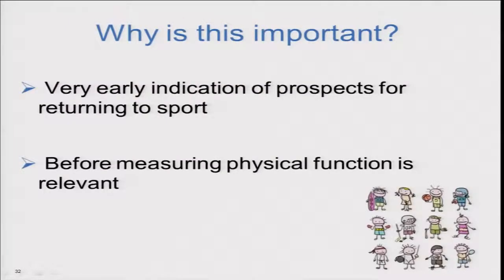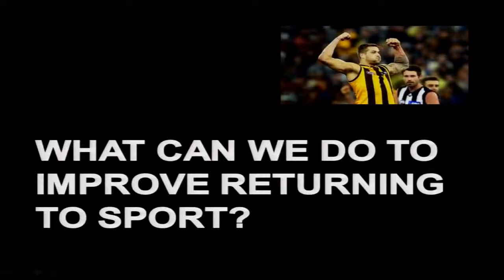Why is this important? Psychological responses very early on — even before athletes have had an ACL reconstruction — can give us an indication of how they're likely to go in terms of return to play. As a clinician, this is particularly interesting because it's at a time when measuring physical function may not give us the same information. There's potentially important information you can glean about an athlete's chances of returning even before surgery. But what do we do with it? Can we use this to inform interventions? This is what I'm exploring in ongoing multi-centre research between Melbourne and Sweden.